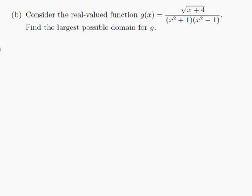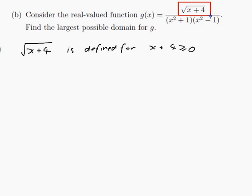First let's look at the square root of x plus 4. The square root is only defined if x plus 4 is positive or zero — we can't square root a negative number for a real valued function. So it is defined for x plus 4 greater than or equal to 0, meaning x is greater than or equal to negative 4. My domain so far is all x greater than or equal to negative 4.